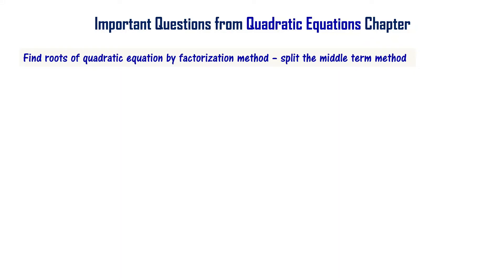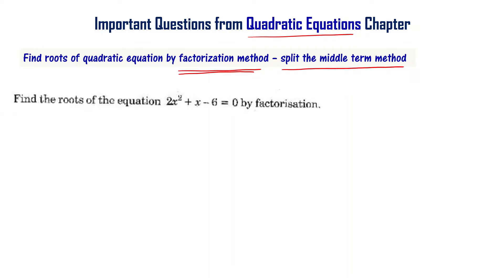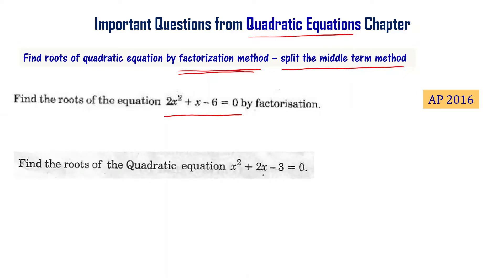Finding roots of a quadratic equation by the factorization method is one of the important topics from the Quadratic Equations chapter. The factorization method is the split-the-middle-term method. We will find the roots of 2x² + x - 6 = 0 by factorization, which is from the AP Final Exam 2016, and also x² + 2x - 3 = 0 from the Telangana Final Exam 2019.